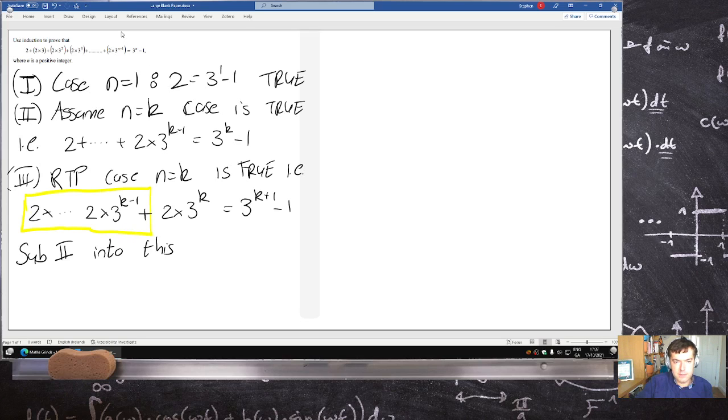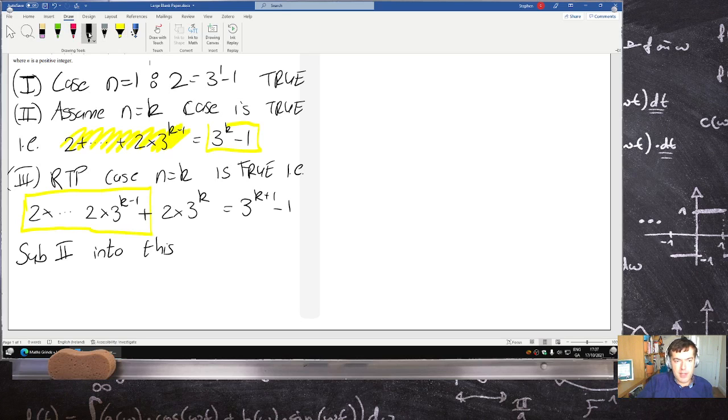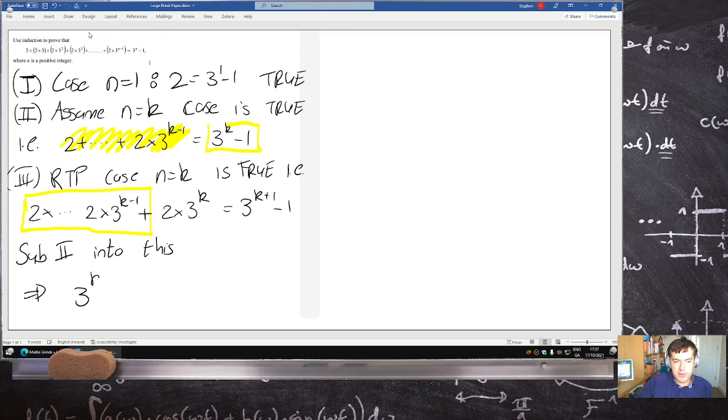So that means we have to prove that 3 to the power k minus 1 plus 2 times 3 to the k equals 3 to the k plus 1 minus 1.